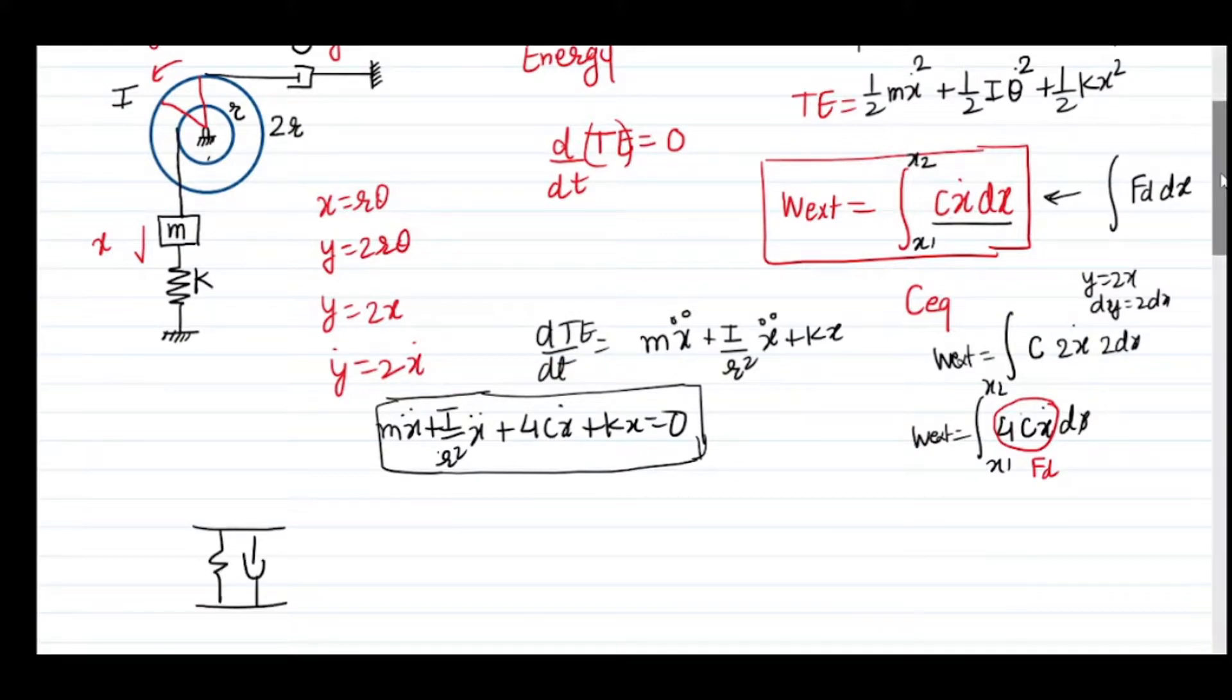If we convert the given system into an equivalent stiffness, mass, and damping system, my M equivalent is M plus I by R squared, my C equivalent is 4C, and my K equivalent is K. This is how we can write the equation of motion where in addition to the mass and spring element we have a damper. I hope you are now able to write the expression using either the energy approach or the force expression.